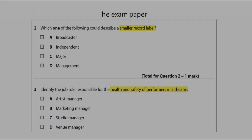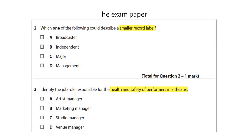Questions two and three are also multiple choice. Question two says: which one of the following could describe a smaller record label? The answers are A: broadcaster, B: independent, C: major, D: management. A broadcaster and management are not part of a record label, so it won't be A or D. We're left with B or C. As the question specifically asks for the smaller record label, we know it's going to be independent — answer B.